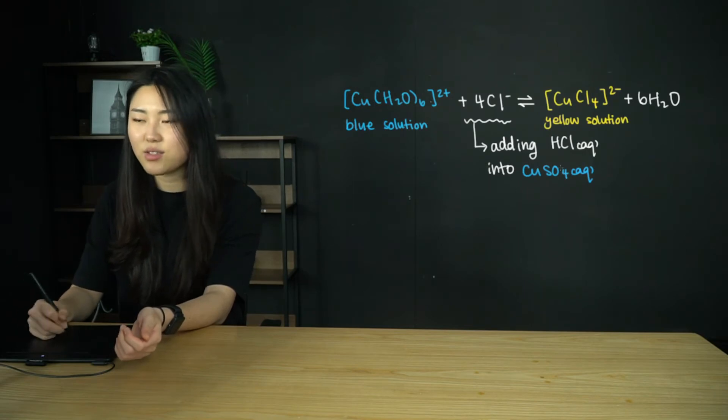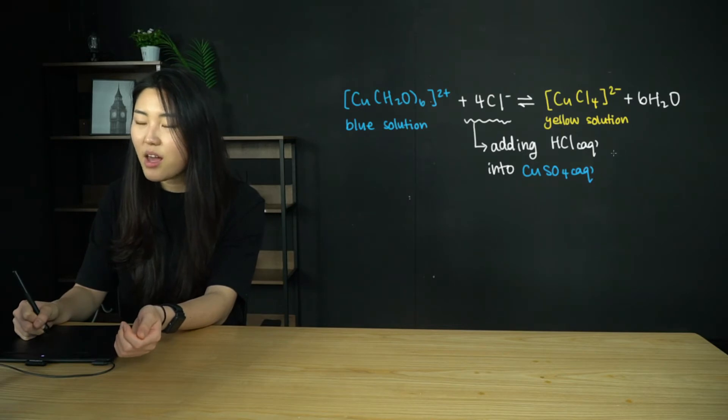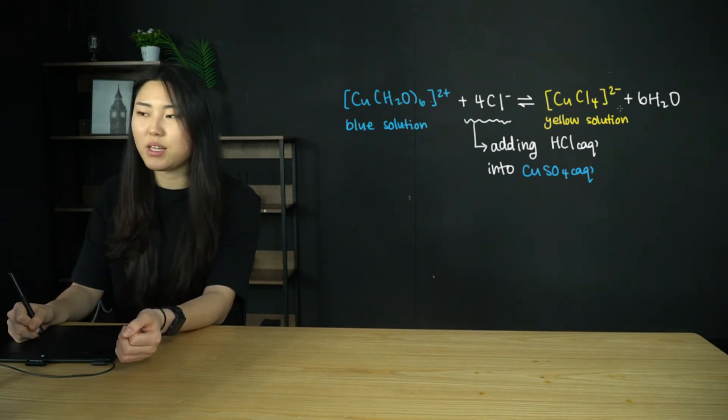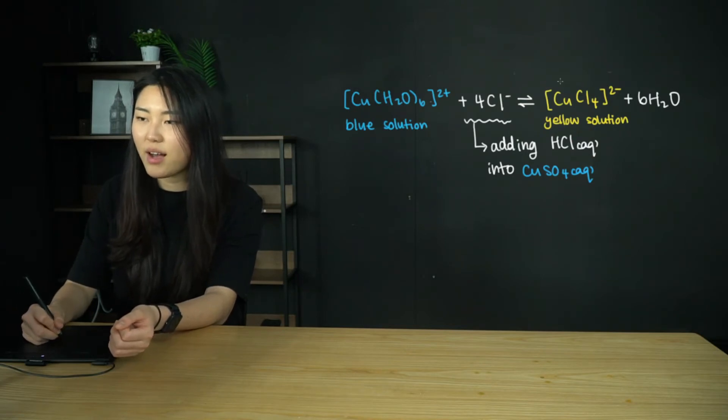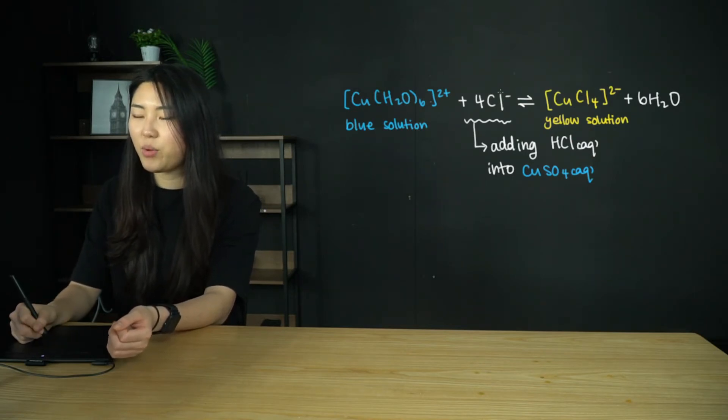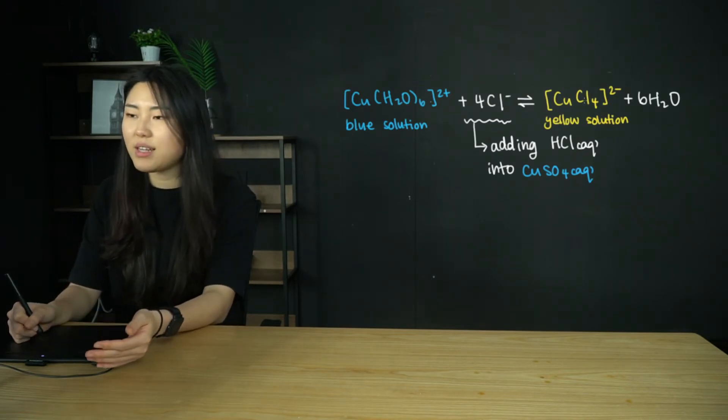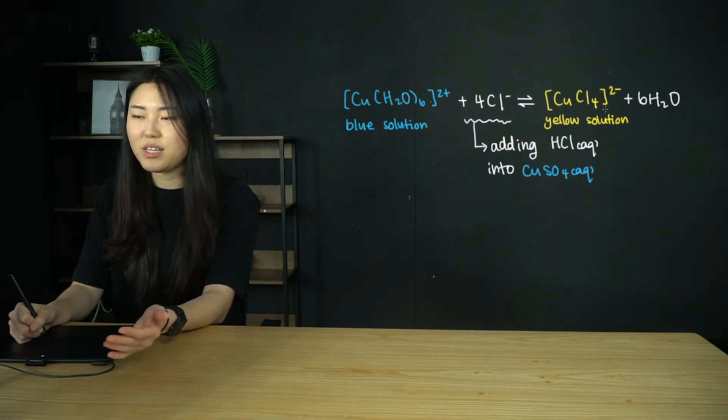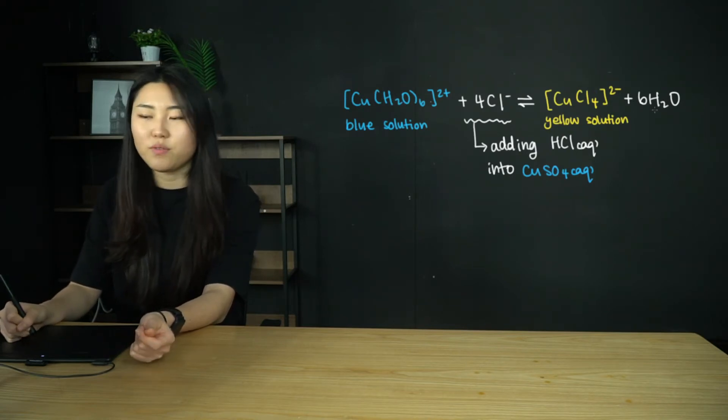When we add the hydrochloric acid, we are going to see a yellow solution forming because ligand exchange has been occurring. The water ligands are going to be replaced by the chloride ions, and we will be forming the tetrachlorocuprate complex. This complex is yellow, and therefore this solution is going to be yellow. The water ligands have been removed.